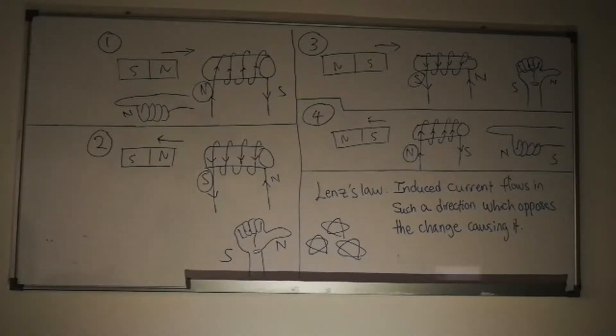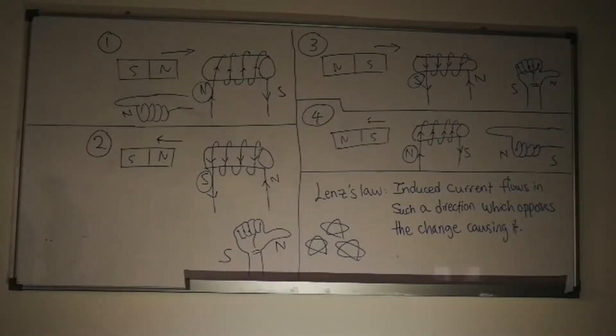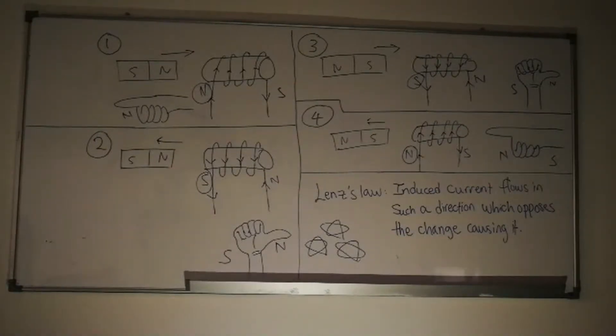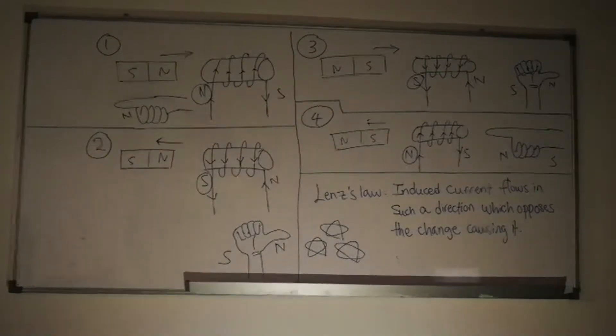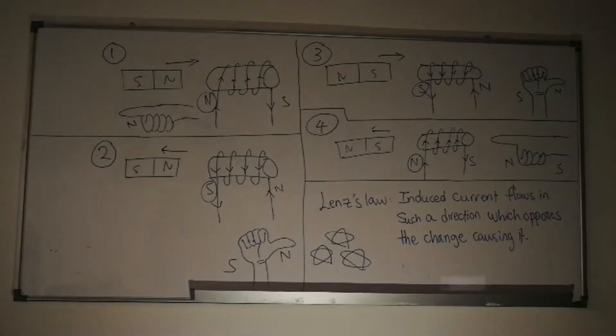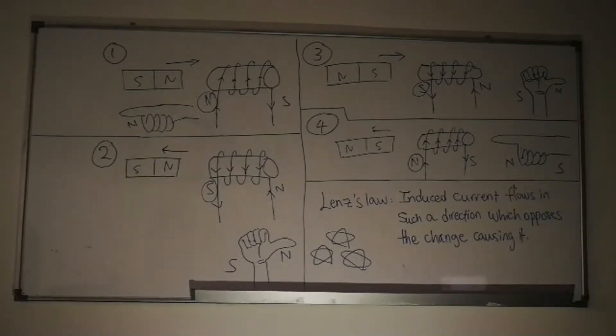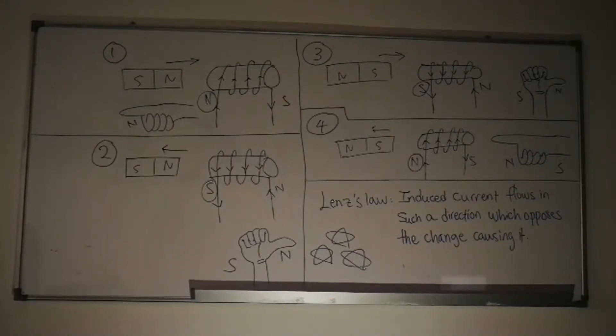Lenz's law is also a form of conservation of energy. This is because when there is a change in the magnetic flux, there is always an opposite force occurring in the solenoid. This is work done. A work must be done to overcome the opposite force. The work done to oppose the force is converted into electrical energy, which creates the induced current.